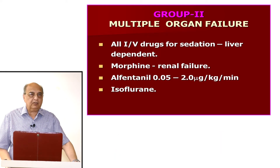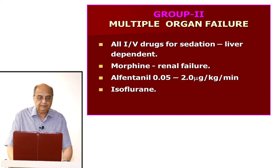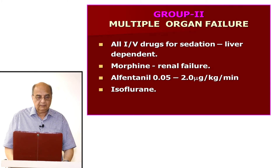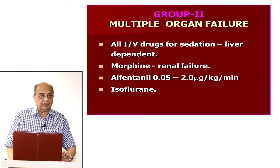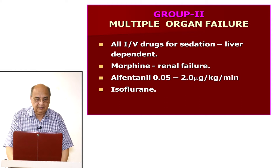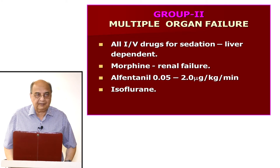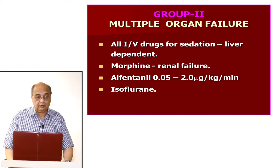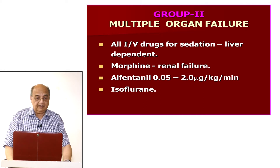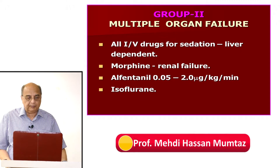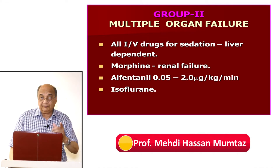Group two is multiple organ failure patients. All IV drugs for sedation are liver-dependent, so one must be very careful looking at liver function. If the patient is in hepatic failure, one has to be very careful giving sedation. Morphine, if not used carefully, can cause renal failure and is contraindicated in renal failure as it accumulates in the body. Alfentanil is ideal for renal failure at 0.05 to 2 micrograms per kilogram per minute, and is also ideal for liver failure.